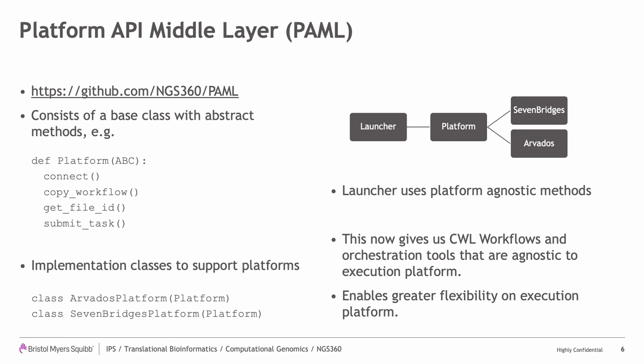PAML provides an abstract base class with a set of methods that subclasses will need to implement. For example, the base class has a method called submitTask. The specific implementation of submitTask for a given platform is handled in the subclass for that platform. This abstraction allows us to support many execution platforms without needing to make changes to the launcher. There are about 20 abstract functions defined in the base class that must be implemented in the subclasses to support project, task, and file management. To date, we've converted all our primary workflows used in clinical trials and a number of research projects to this framework. Deploying new pipelines using this framework can now be done in a matter of hours. We are now no longer tied to a specific execution platform and can quickly shift from one platform to another with minimal effort, which was the original goal for the platform API middle layer.